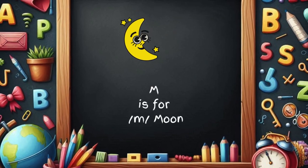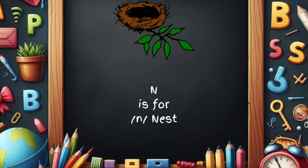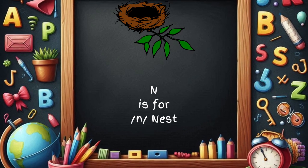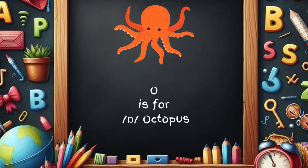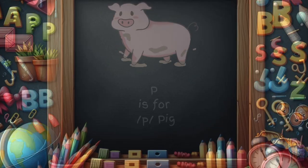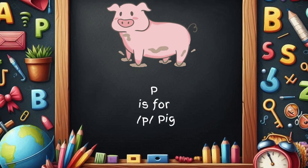M is for moon, m-m-moon. N is for nest, n-n-nest. O is for octopus, o-o-octopus. P is for pig, p-p-pig.